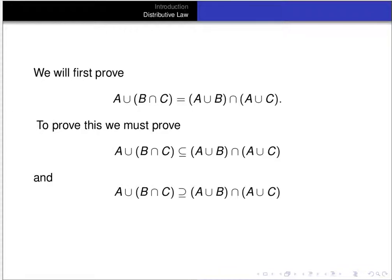To prove this, we have to prove two things — both directions. We have to prove that A∪(B∩C) is a subset of (A∪B)∩(A∪C), and we have to prove that (A∪B)∩(A∪C) is a subset of A∪(B∩C). We have to prove those two things in order to prove the equality.